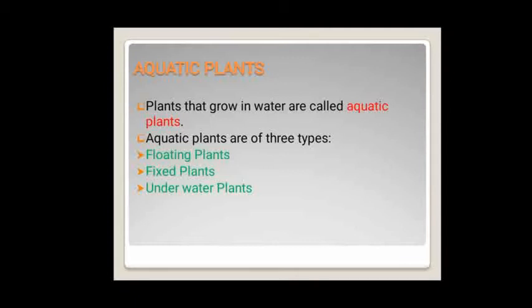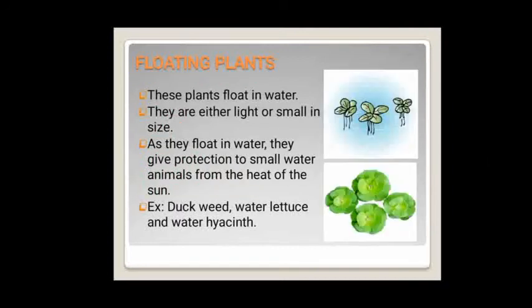The second type is aquatic plants. Plants that grow in water are called aquatic plants. Aquatic plants are of three types: floating plants, fixed plants, and underwater plants. Floating plants float in water, hence the name. They are either light or small in size. As they float in water, they give protection to small water animals from the heat of the sun. Examples are duckweed, water lettuce and water hyacinth.